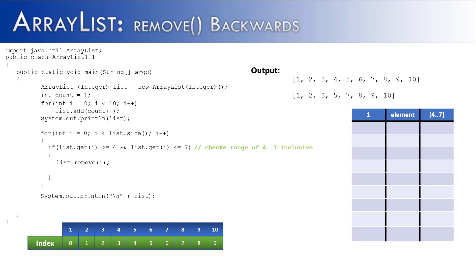Now if I was to run this program right now, the output would be 1, 2, 3, 5, 7, 8, 9, 10. You can see that 5 and 7 should not be there. This is really the problem that I want to address in this video — how to get the remove method to remove multiple items from an ArrayList correctly.